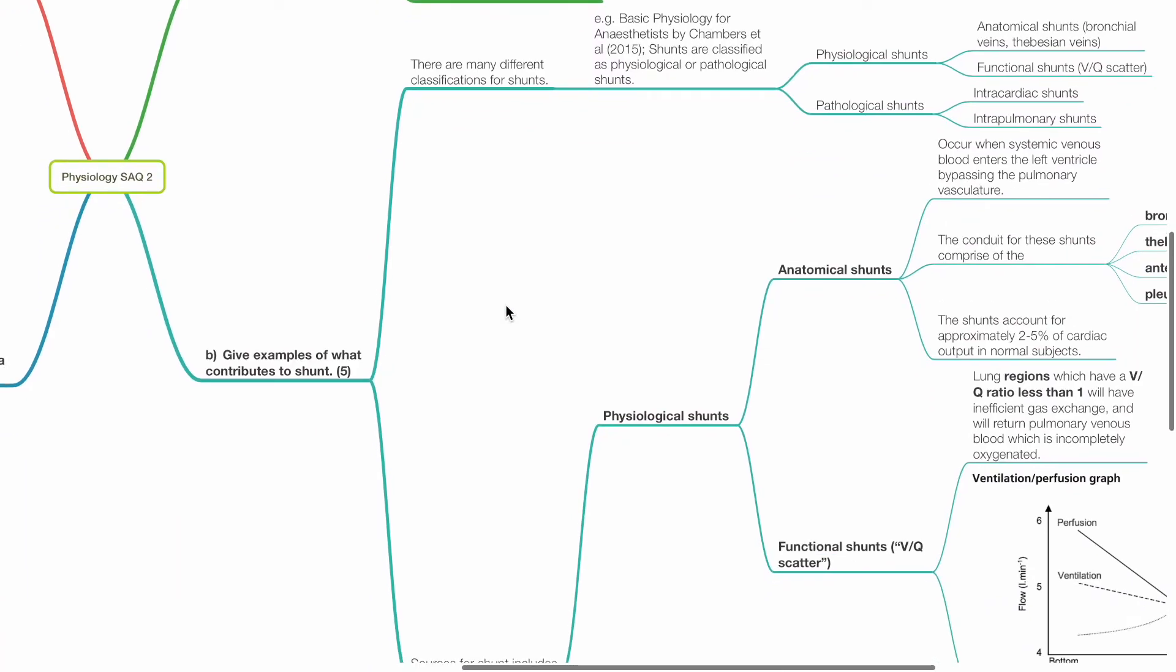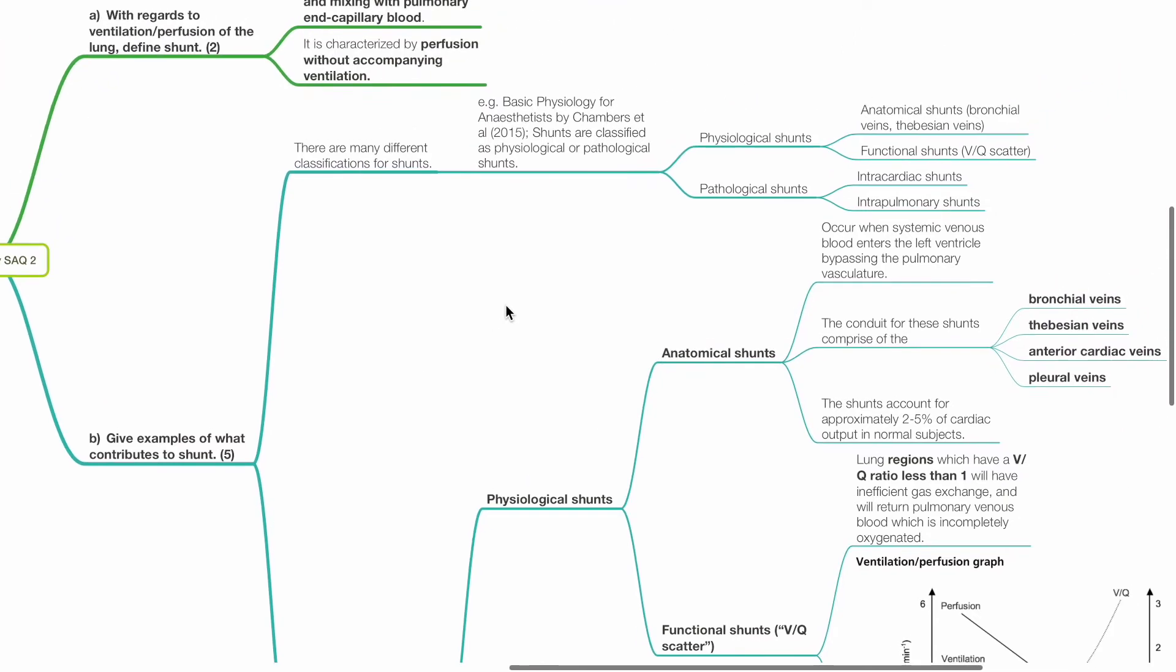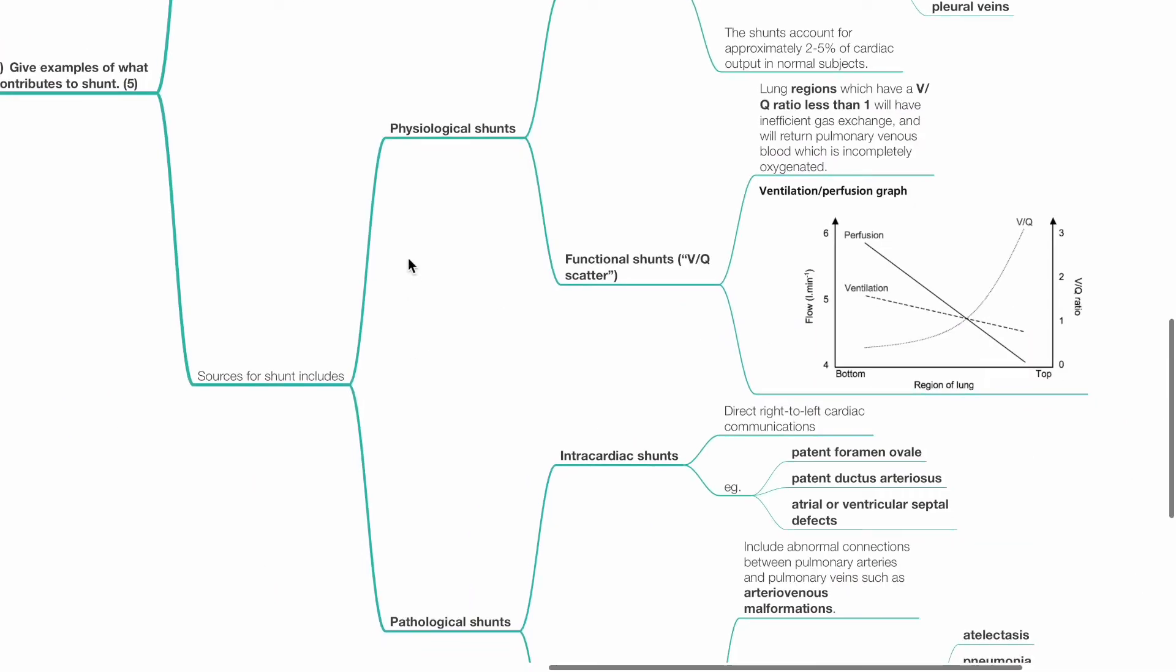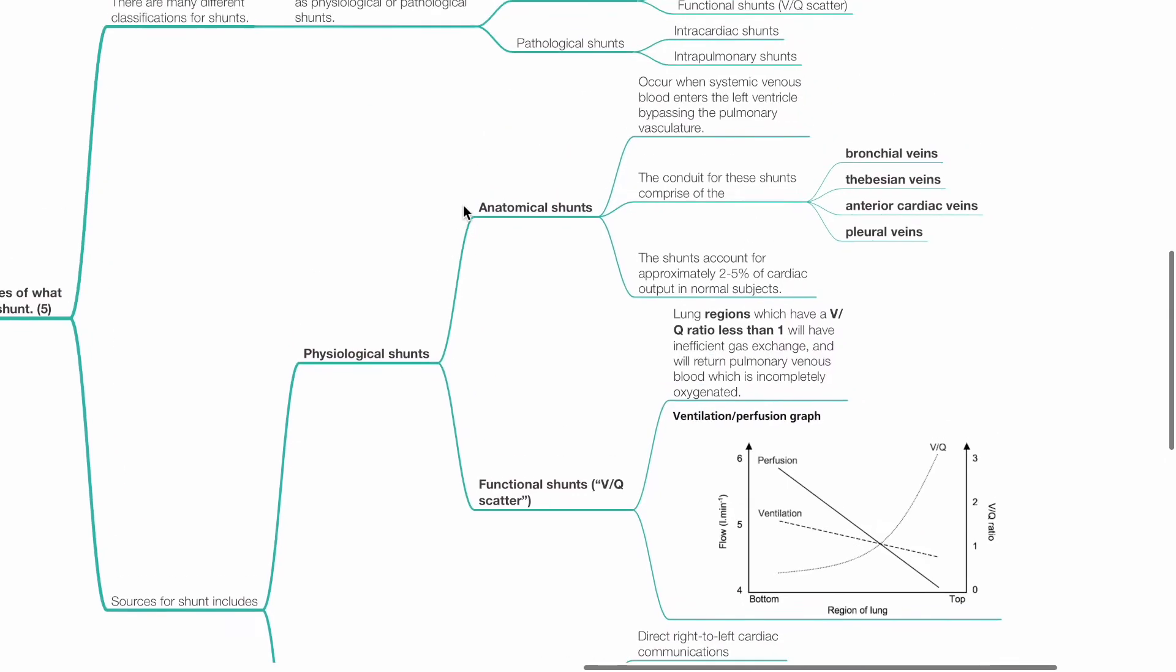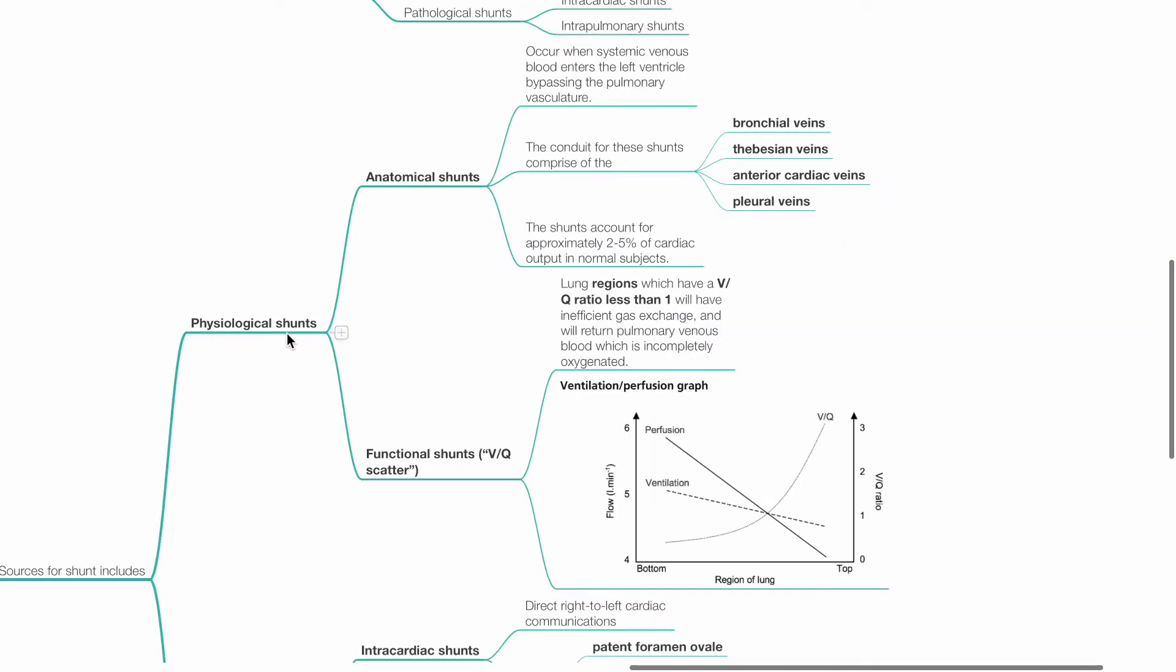Give examples of what contributes to shunt, 5 marks. Sources for shunt include physiological shunts and pathological shunts. The two types of physiological shunts are anatomical shunts and functional shunts.